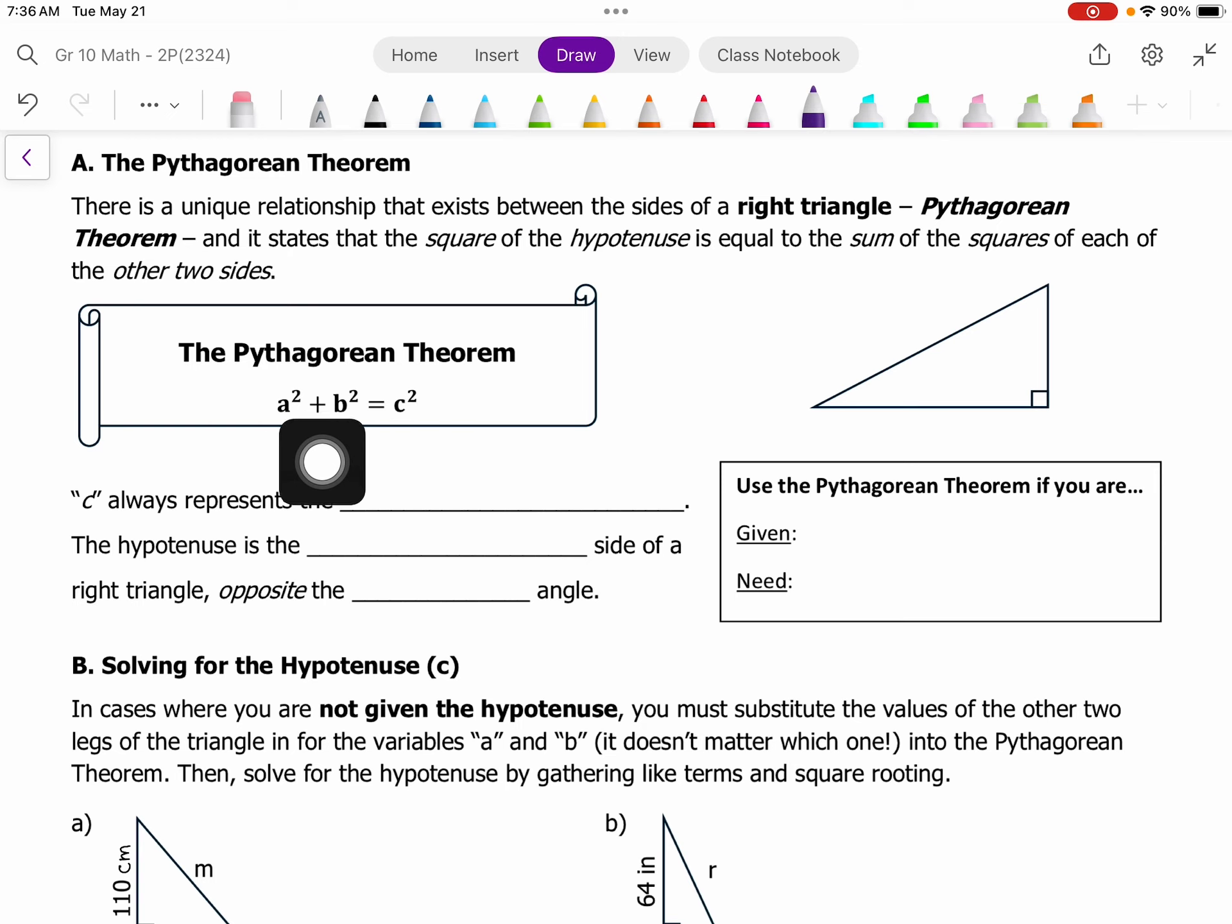When we use this formula, the c is always going to be the hypotenuse.